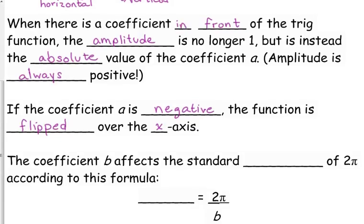And then the other most common thing we're going to deal with is when we have b - that affects the standard period of 2 pi. But we figure out the new period according to this formula: the new period is equal to 2 pi divided by b. Now you're going to have to kind of work that out by hand, you'll see here in a second how we deal with that, but you'll have to work that out by hand.